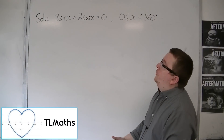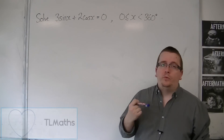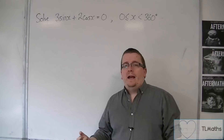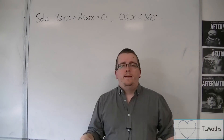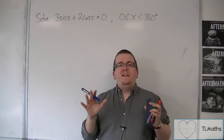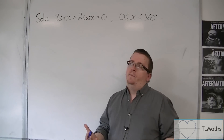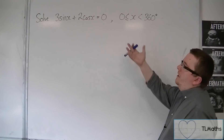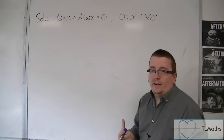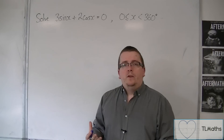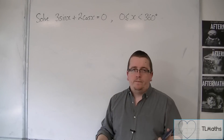Let's say we want to solve 3sin(x) + 2cos(x) = 0, working with degrees between 0 and 360. Now it's not immediately obvious as to how you could go about solving this problem. We can't factorise it, we can't solve it as it is. So all that we're left able to do is to rearrange it.